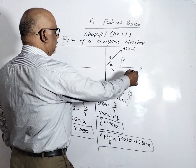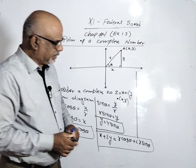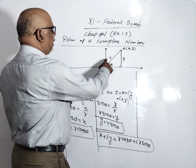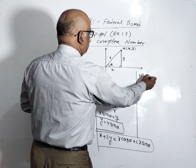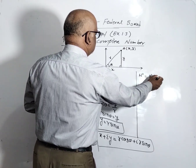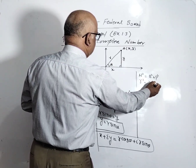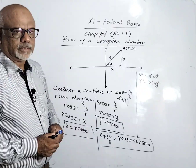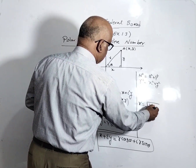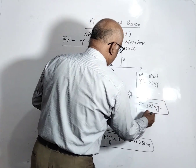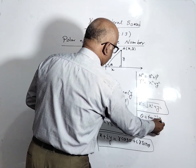Now, what is the value of r? Since r is the hypotenuse, by the Pythagorean theorem: r² = x² + y², so r = √(x² + y²). And if we have to find θ, it equals tangent inverse of y over x.